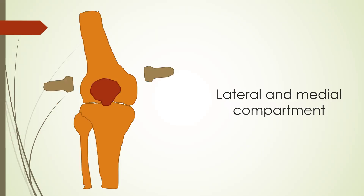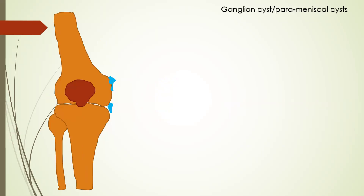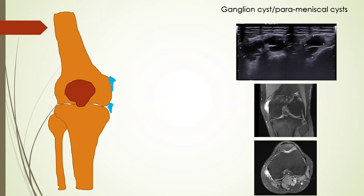Next we evaluate the medial and lateral compartments. We can see ganglion cysts and parameniscal cysts in the lateral and medial compartments. Ganglion cysts can occur anywhere with or without communication with the joint capsule. When these cysts are seen in relation to the menisci associated with a horizontal meniscal tear, they are called parameniscal cysts. In this case there is a complex cyst in relation to the medial femoral condyle, away from the meniscus — this is a ganglion cyst.